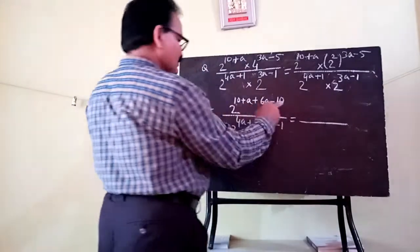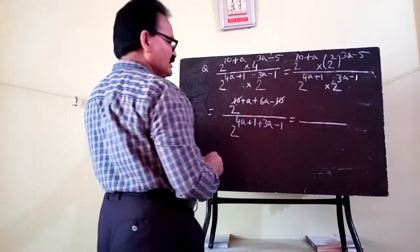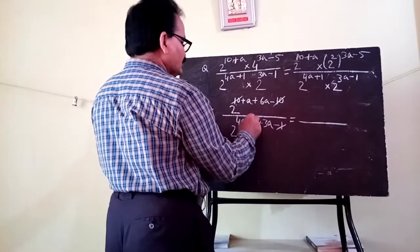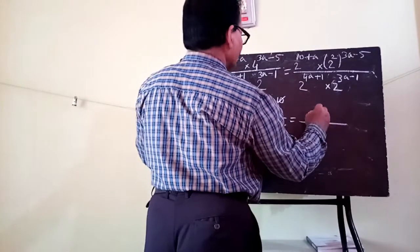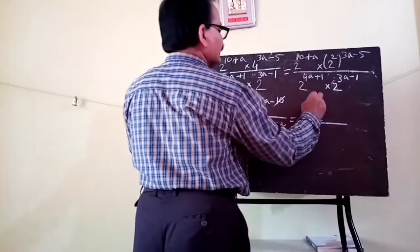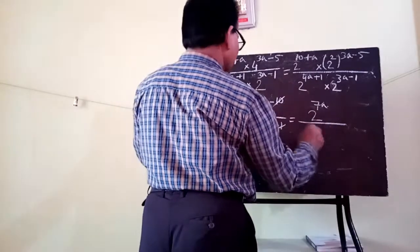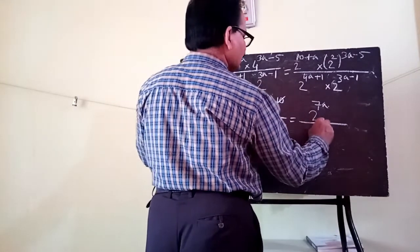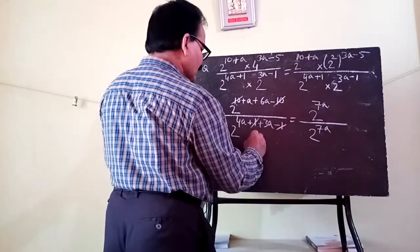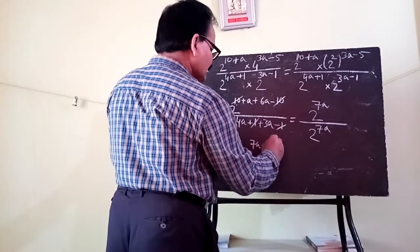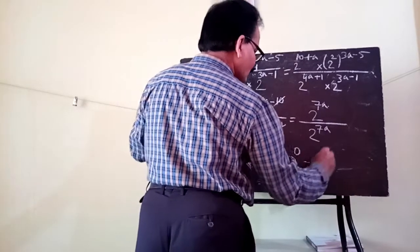After simplification, the 10 and minus 10 cancel, and the plus 1 and minus 1 cancel. In the numerator, 1a plus 6a gives 7a; in the denominator, 4a plus 3a gives 7a. So we have 2 to the power 7a divided by 2 to the power 7a, which equals 2 to the power 0, which equals 1.